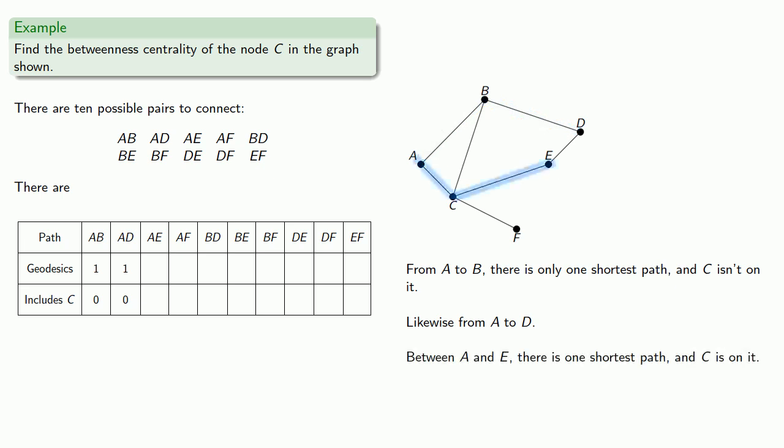So that's one more shortest path and one shortest path that C is on. And between A and F, there's a shortest path, and C is also on that shortest path.